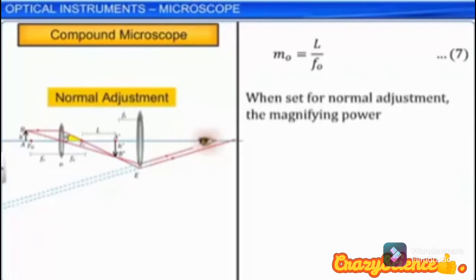For larger magnification, the objective and the eyepiece of a compound microscope must have small focal lengths.